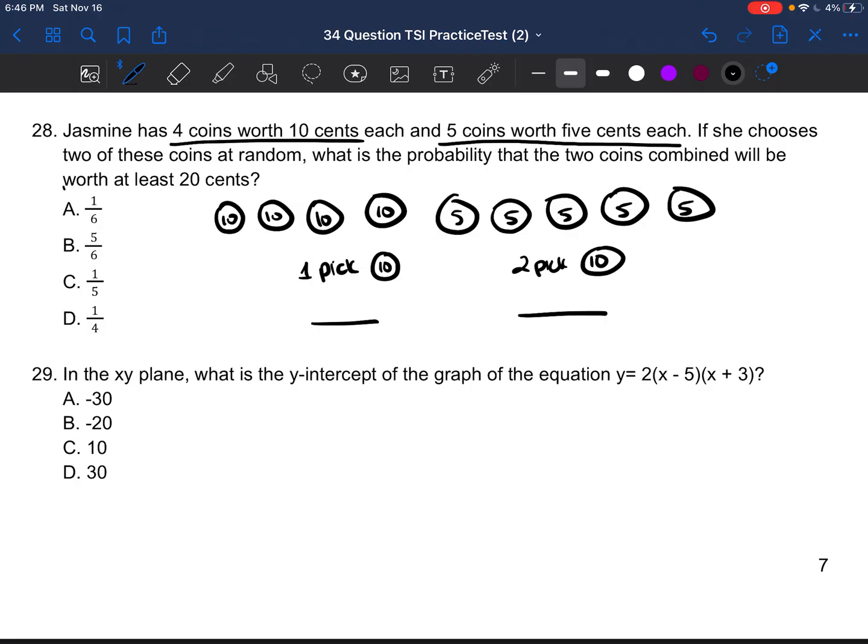So for the first pick, what is the probability of her picking a dime? So there's four dimes: one, two, three, four. So four would be the top number out of a total of four, five, six, seven, eight, nine. So four out of nine. Four is the chances of her getting a dime. There's four dimes, and nine is the total amount of coins. Okay, then we're going to multiply that.